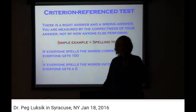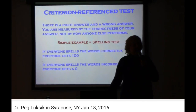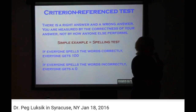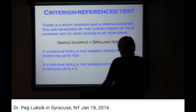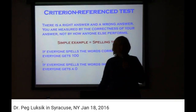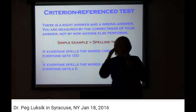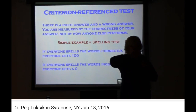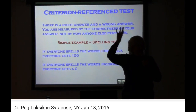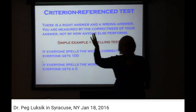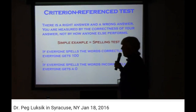A criterion reference test is like your spelling test. If everybody spells all the words correctly, everybody gets 100. If everybody spells them wrong, everybody gets a zero. You're judged against the information content — against the criterion.